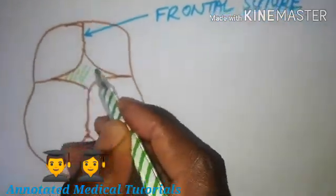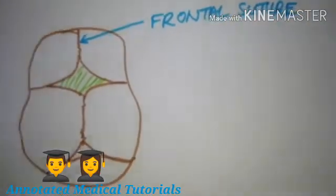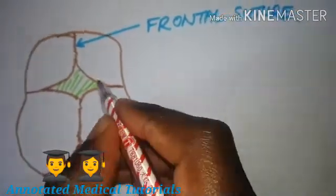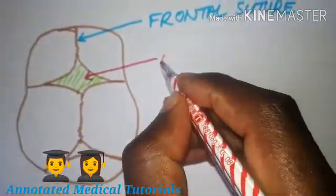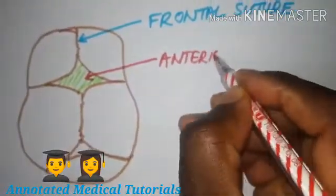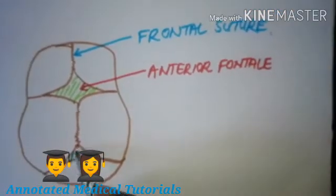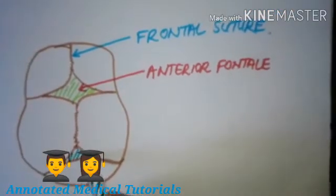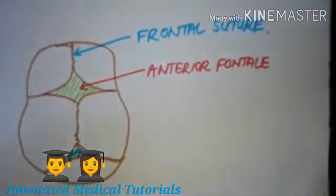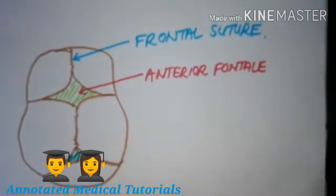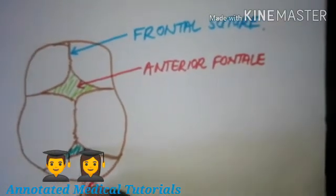The gaps in between are covered by a membrane and these gaps are called the fontanels. The first one is what we call the anterior fontanel, and then on the posterior aspect, in between the two parietal bones and the occipital bone, we have the posterior fontanel.